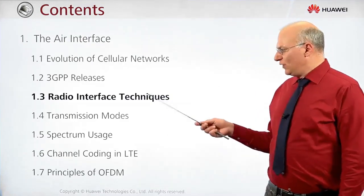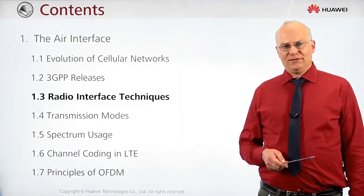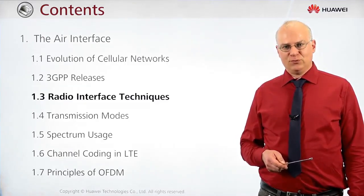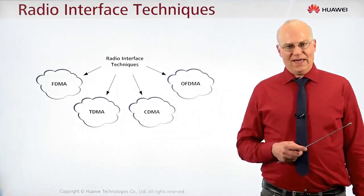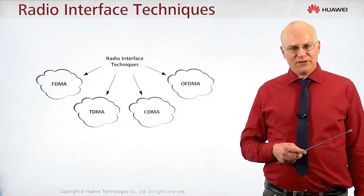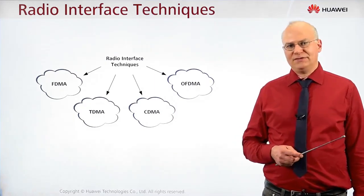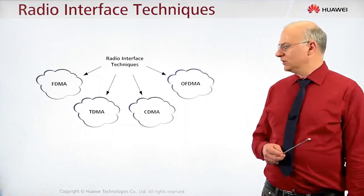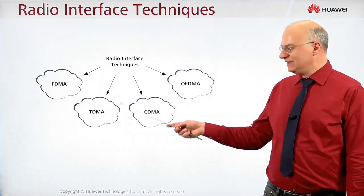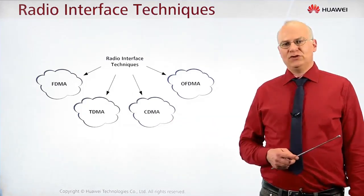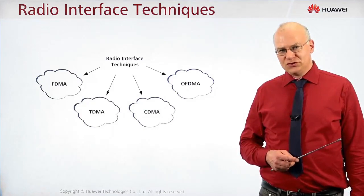The next chapter is about radio interface techniques. We look at the different possibilities on the interface. First, we have FDMA — Frequency Division Multiple Access — which was the first multiple access scheme introduced in mobile phone systems. Then we have TDMA, which was only possible after the introduction of digital systems.